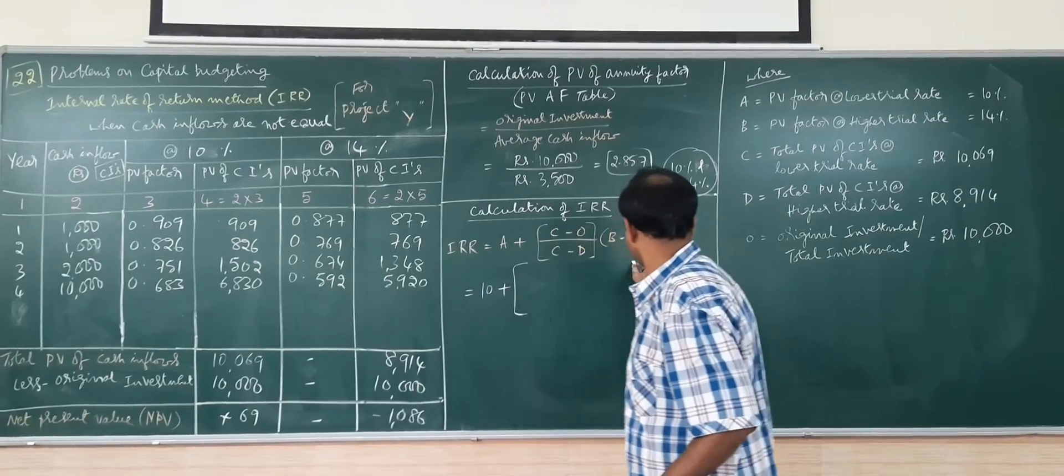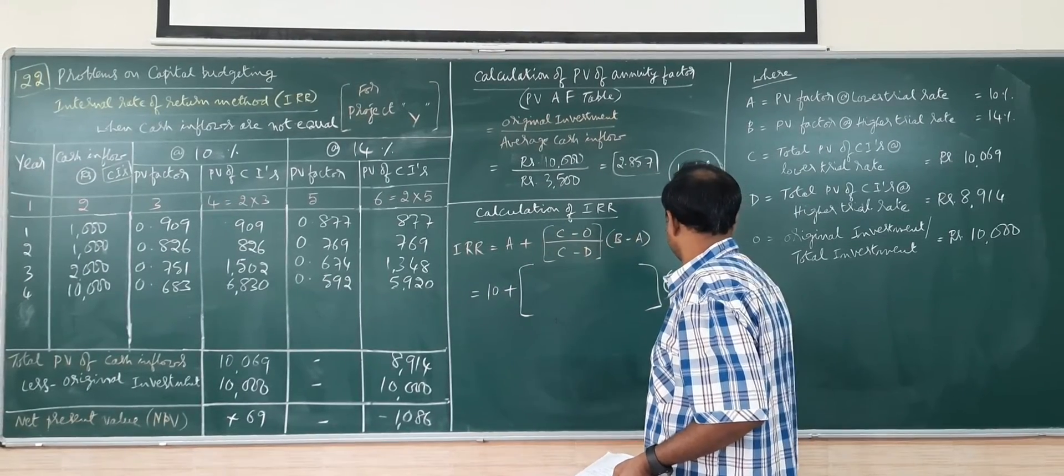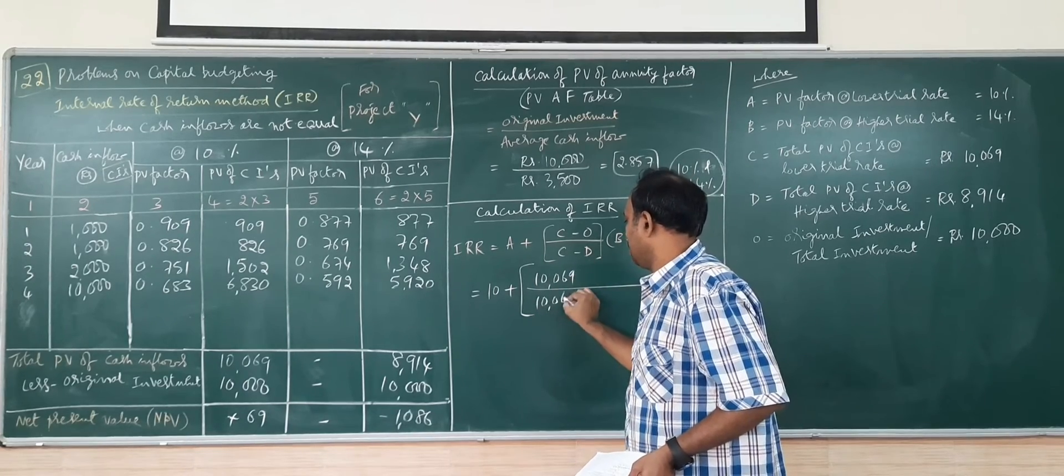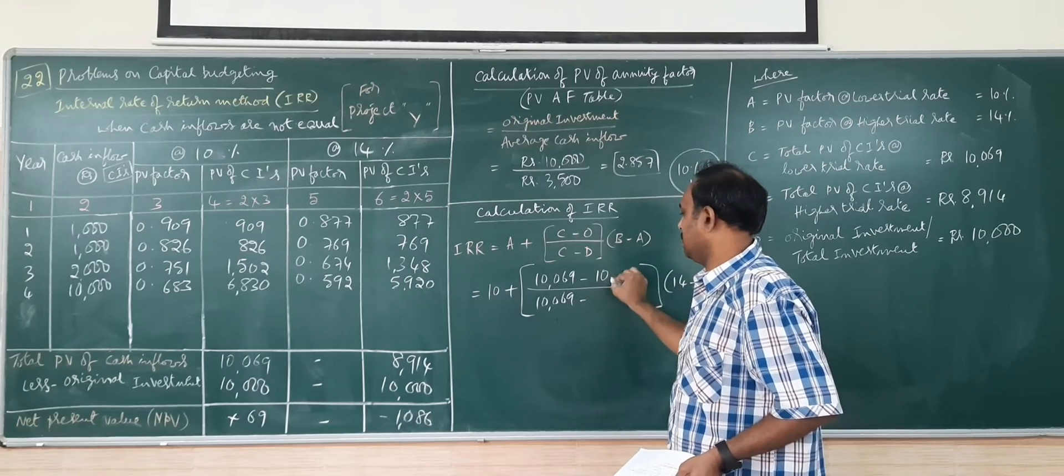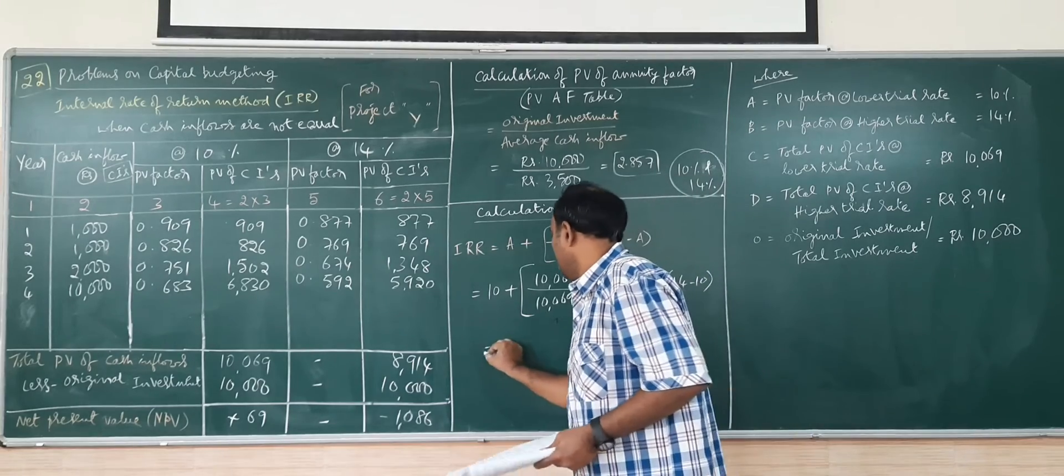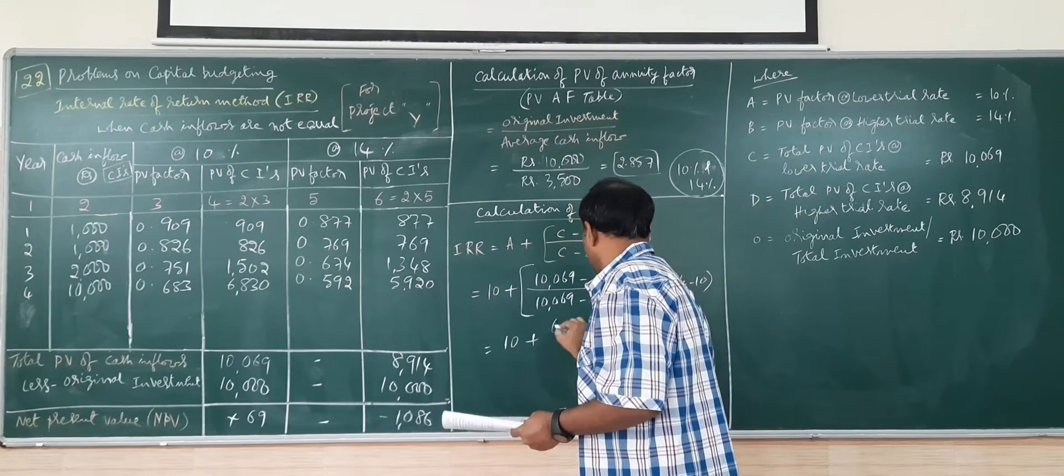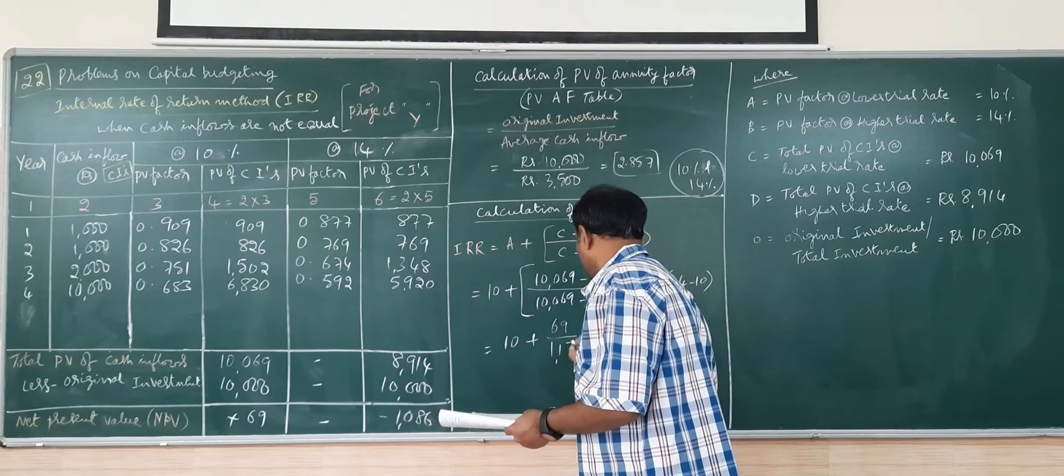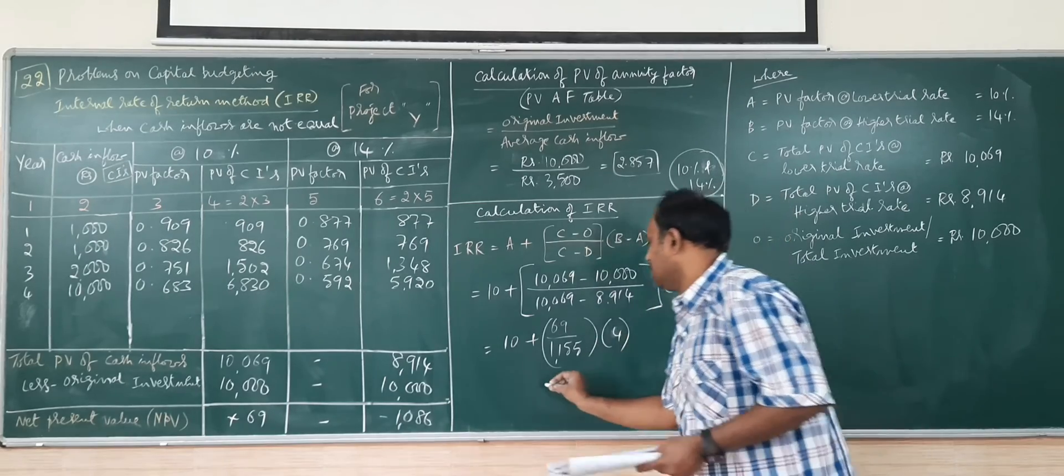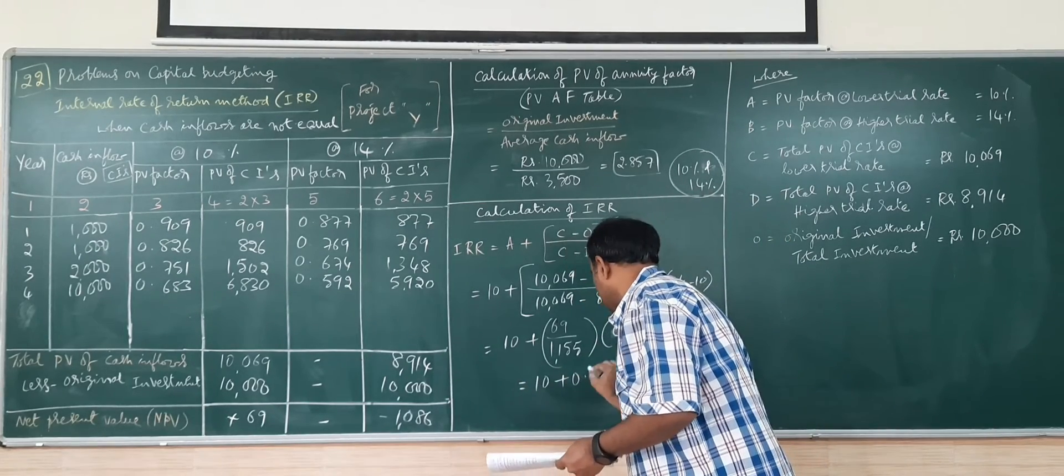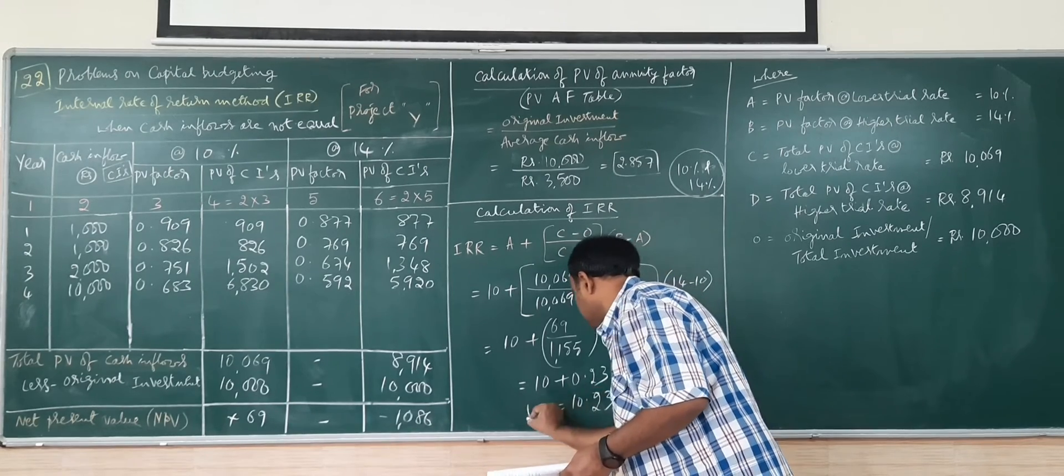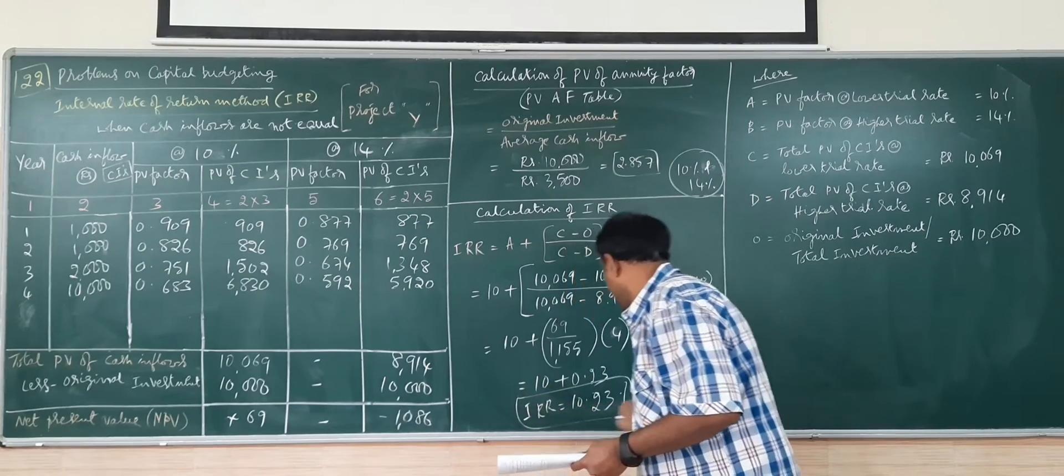10%. 14-10, C is 10,069, initial investment is 10,000. Here, 8914. 10 plus 69 divided by 1155 multiplied by 4. 10 plus 0.23, 10.23 percentage IRR.